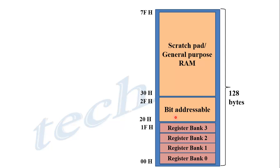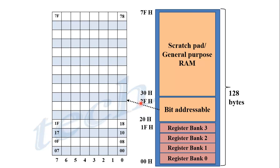Next is bit addressable RAM, which has address starting from 20H to 2FH — these are the 16 bytes of RAM memory. In some applications, the microcontroller needs to store results in the form of bits, so this bit addressable area is used. Each bit is accessible by its own address. For example, the 8 bits of address 20H each have their own bit address — the LSB bit has address 00H and the MSB bit has address 07H. Similarly, address 21H has LSB bit address 08H and MSB bit address 0FH. In this way, every bit in the bit addressable area has a specific address and can be read or written using that address.